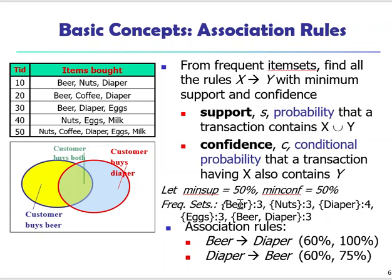The first four frequent sets contain only one item. Since an association rule needs a left-hand side and a right-hand side, the only frequent set that could generate a rule is the beer-diaper frequent set. From this one frequent set, we can generate two rules: beer to diaper, and diaper to beer. We can then compute the support and confidence and compare these two rules.